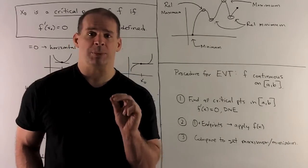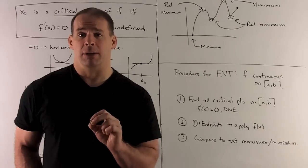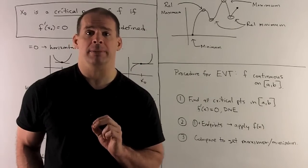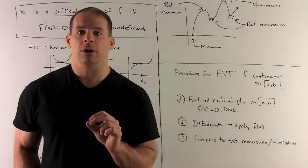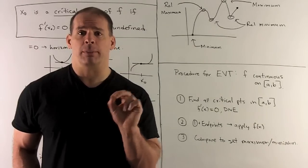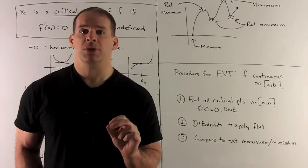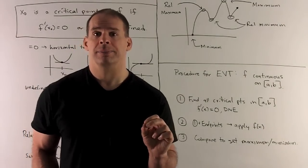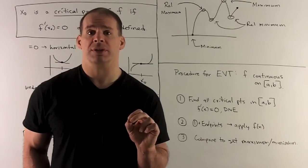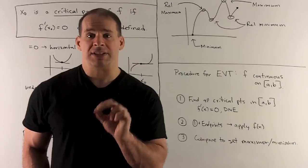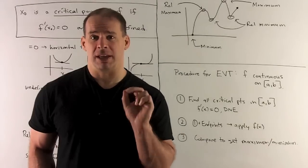This leads us to a recipe for finding the points in the Extreme Value Theorem. The theorem says maximums and minimums show up in your region, but doesn't say where. Our procedure: assume f is continuous and has its derivative at all but maybe a few points. Take the derivative, find your critical points where the derivative is zero or undefined. Apply f to those critical points and to the endpoints, then compare all those values to find your minimum and maximum.